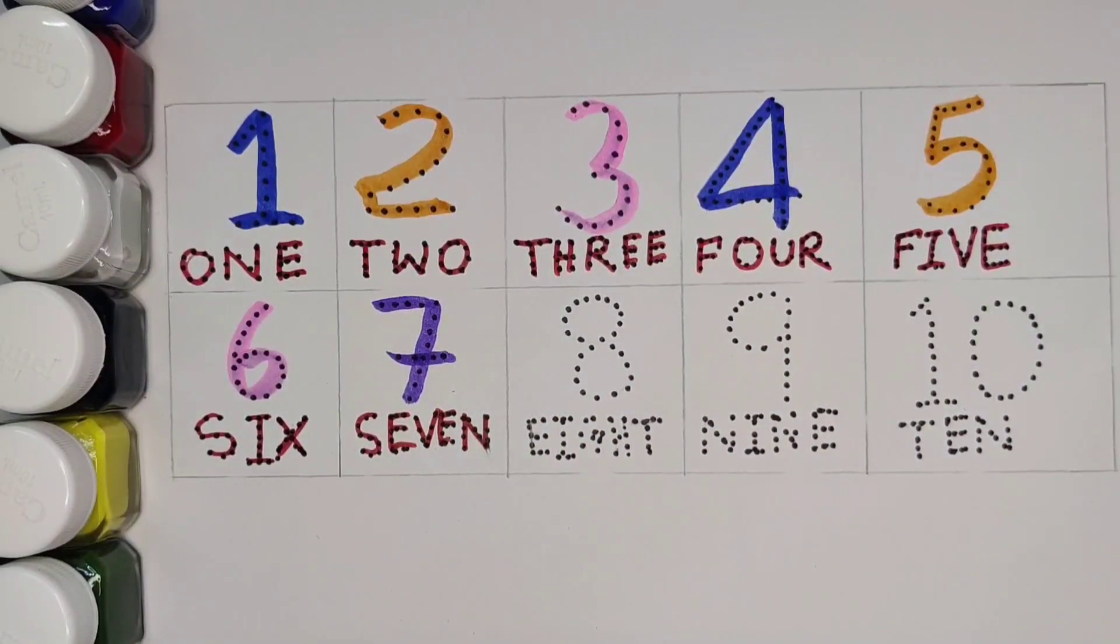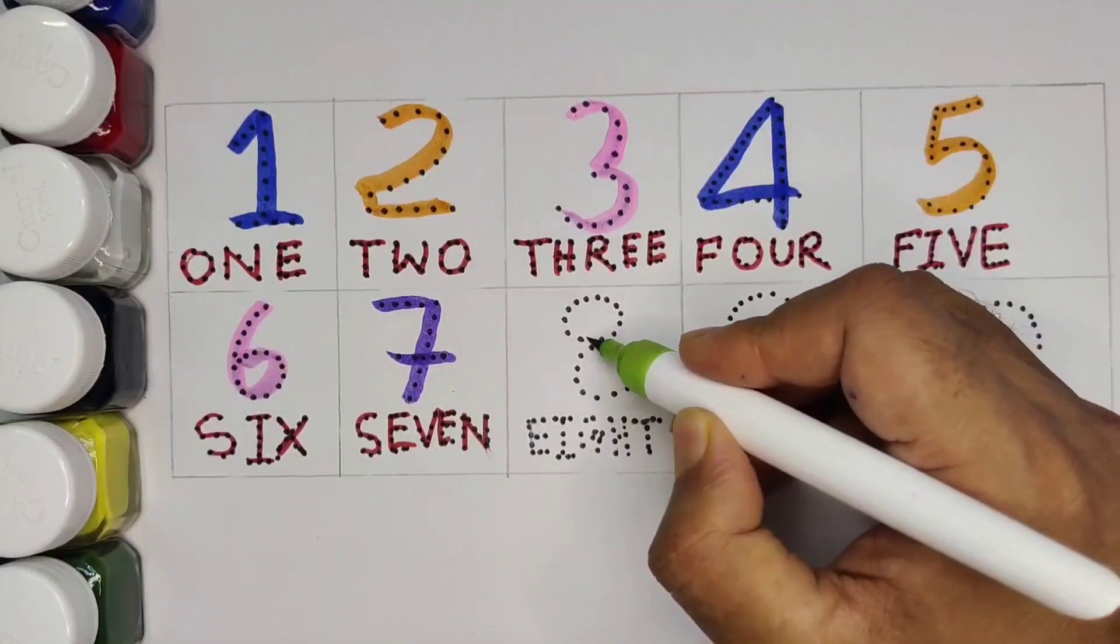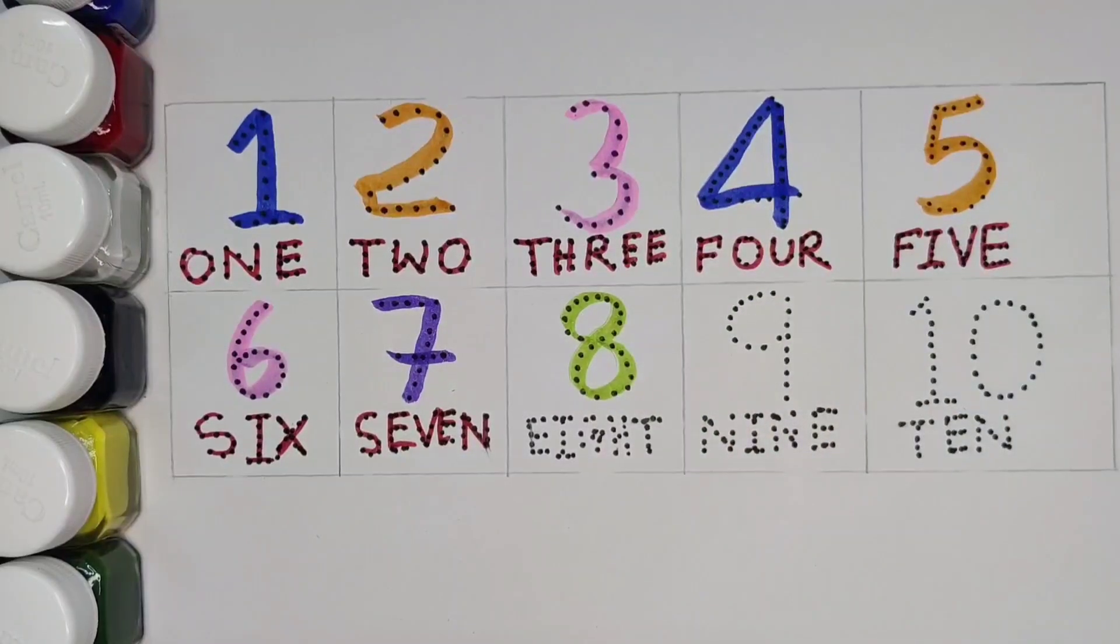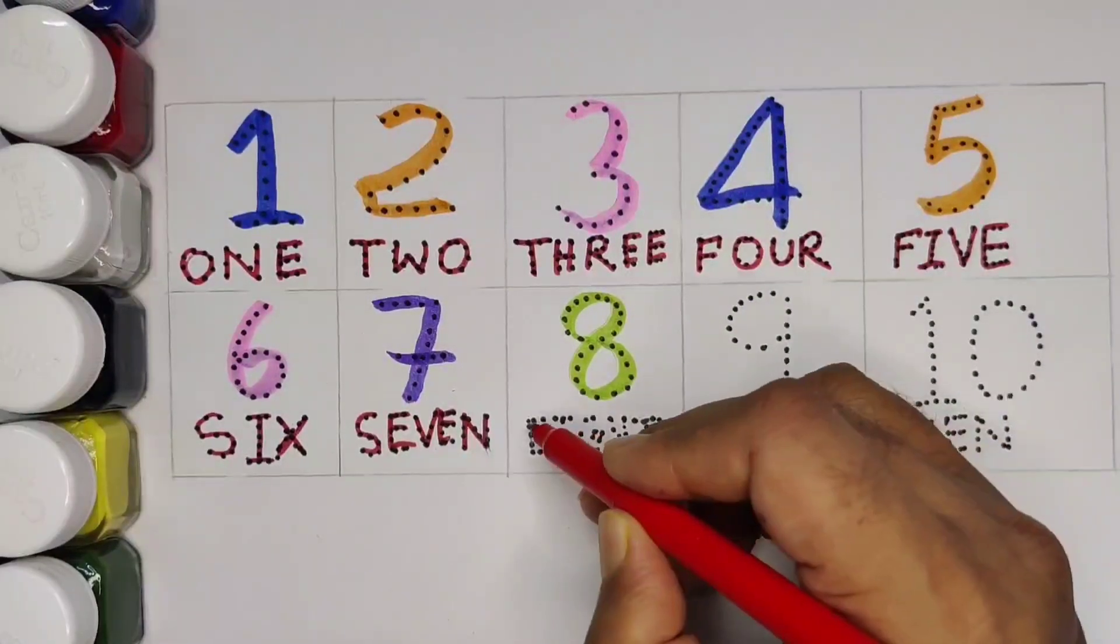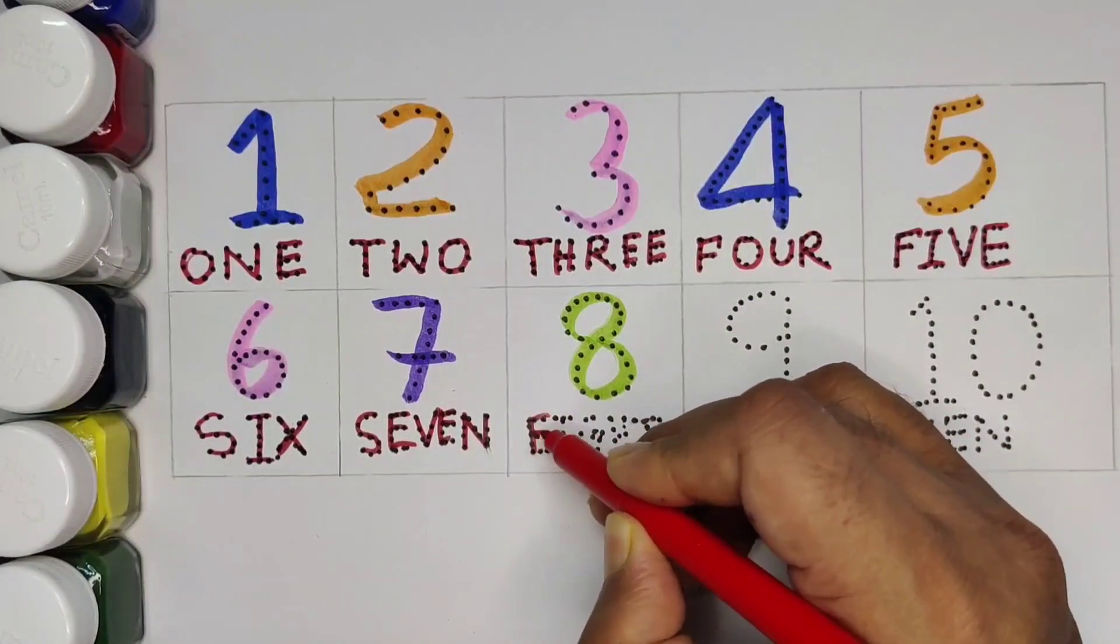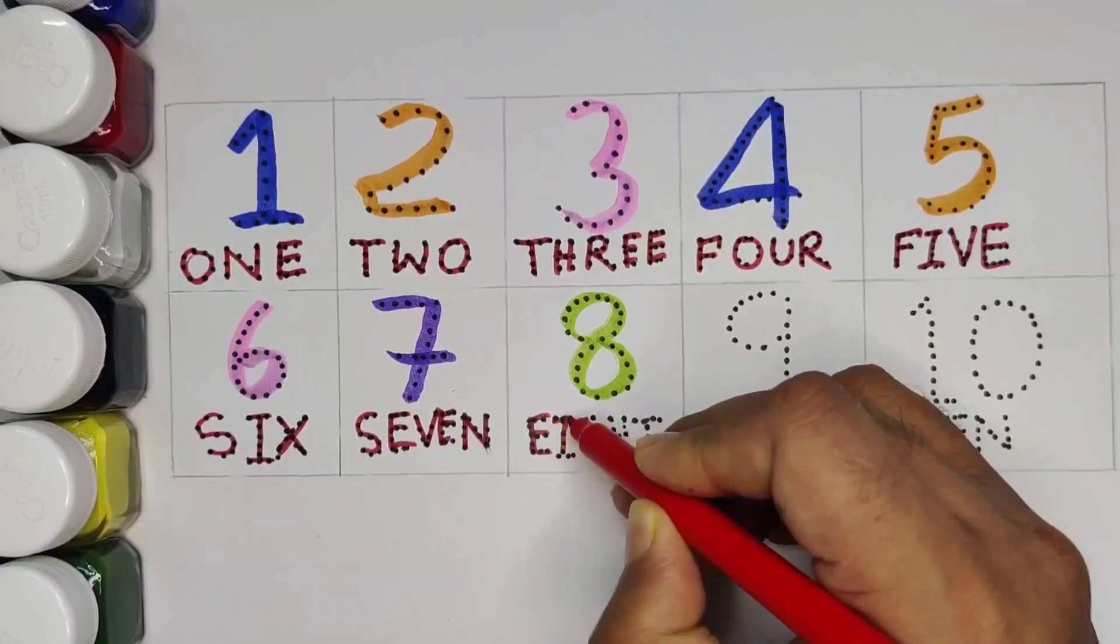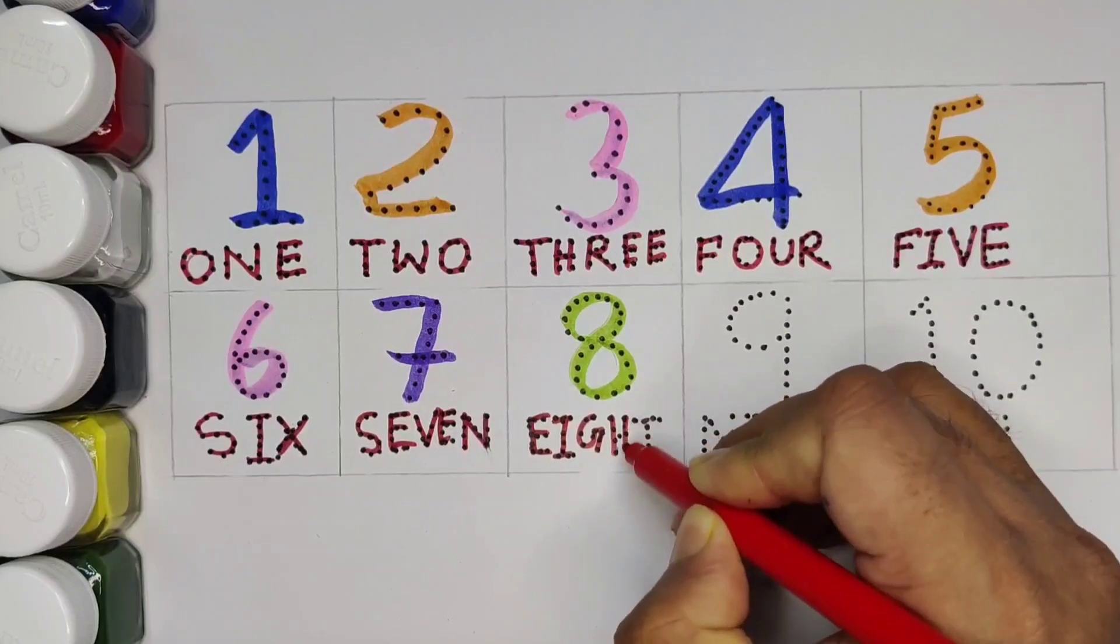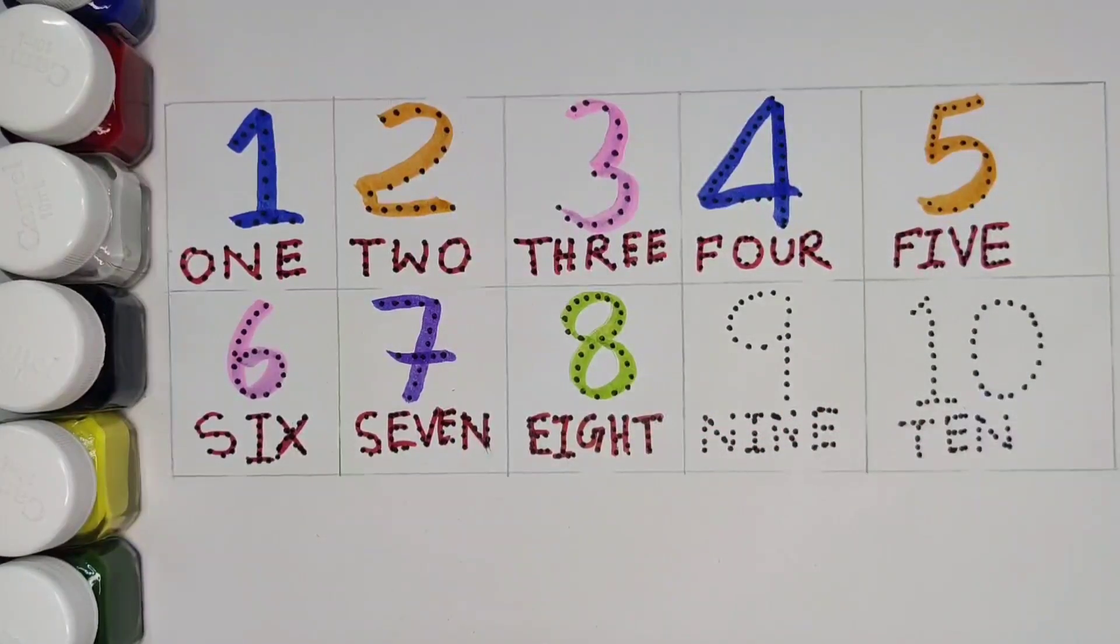And now 8. Green color. Spelling is E.I.G.H.T. 8.